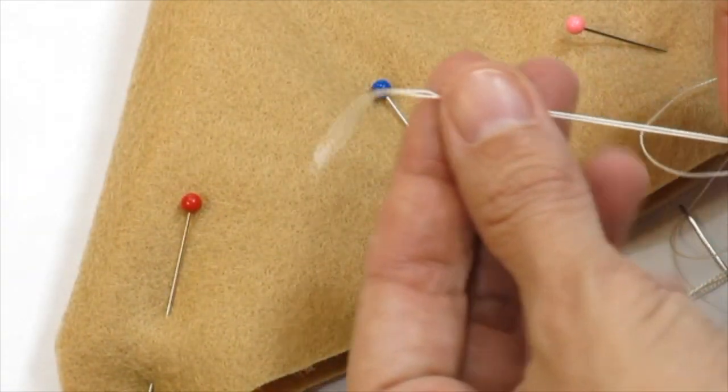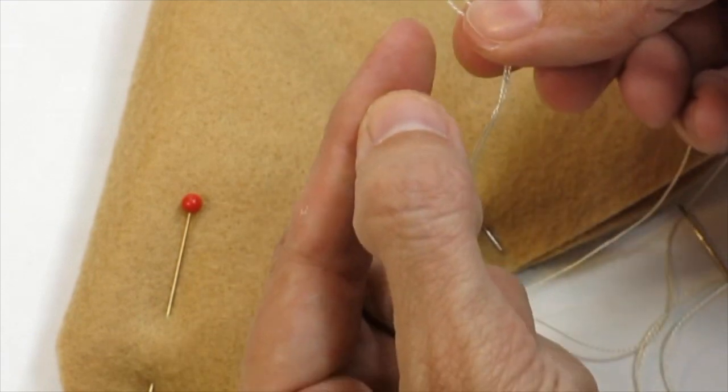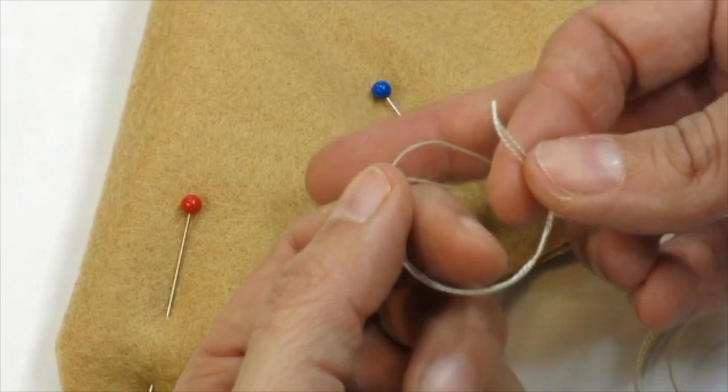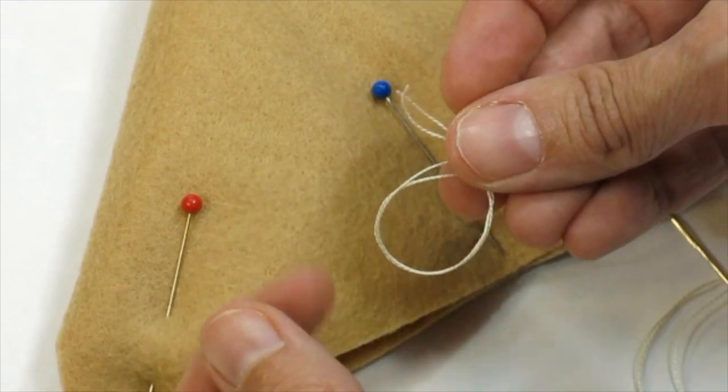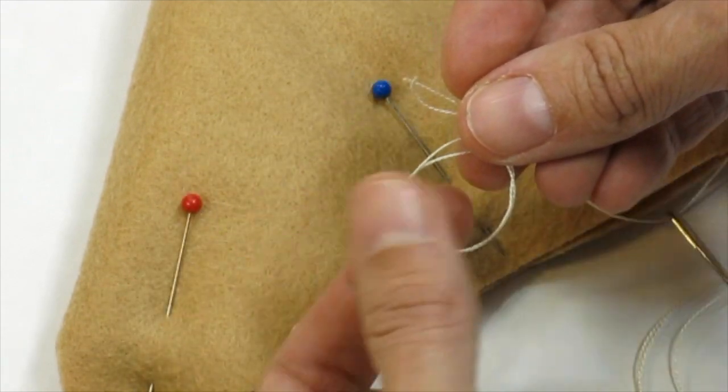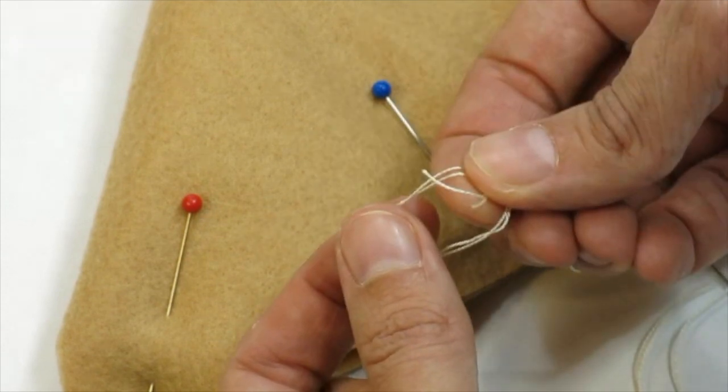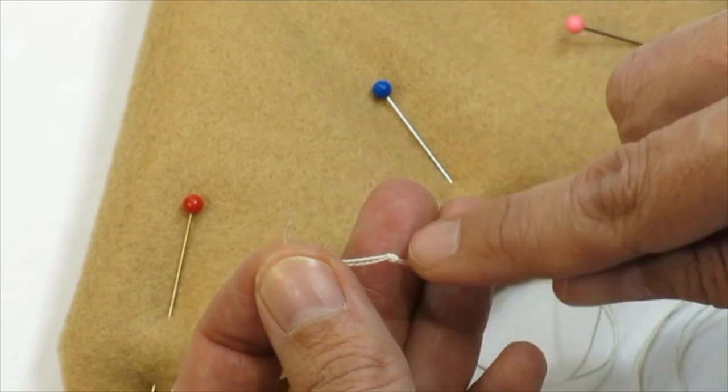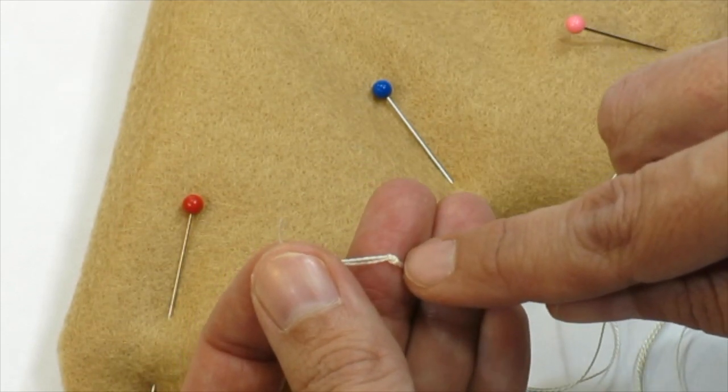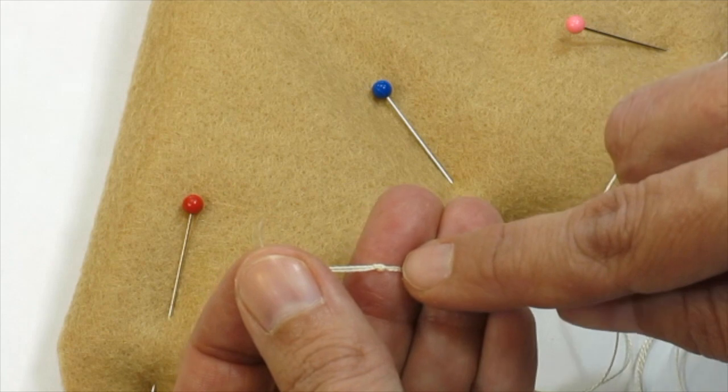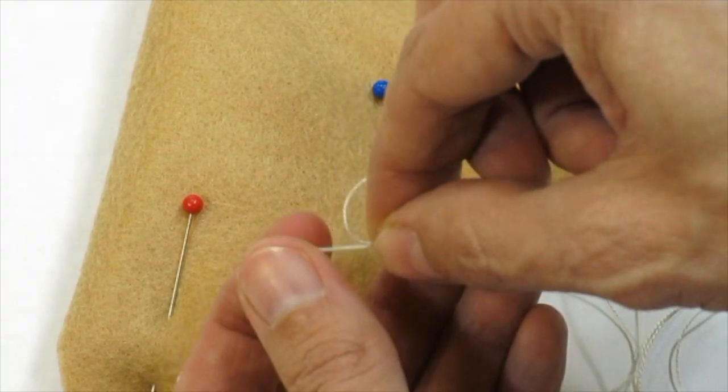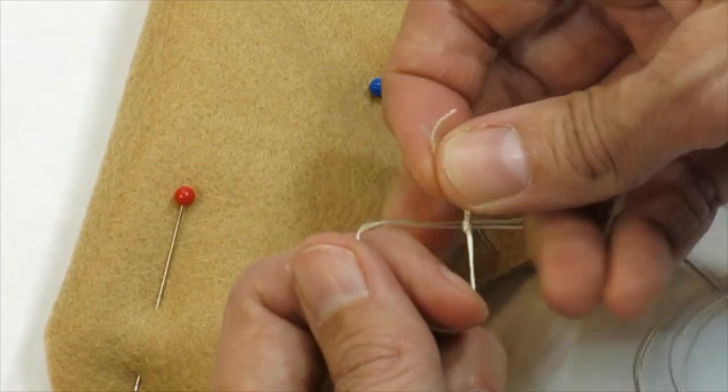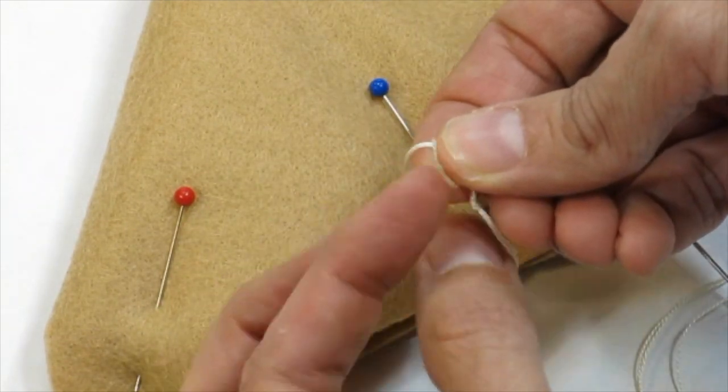Now we're going to need to knot the ends of the thread. So you're going to need to match up the two ends of thread. Make the letter U. Make the letter O. Take those tails. Put them inside of that O and pull. Now you have a knot. I like to make a double knot. That's really going to make it so that when I'm sewing, my thread doesn't come flying out of whatever I'm stitching. So I'm just going to do that same thing again. Make the letter U. And O. Take the tails. Put them in the opening. And pull.